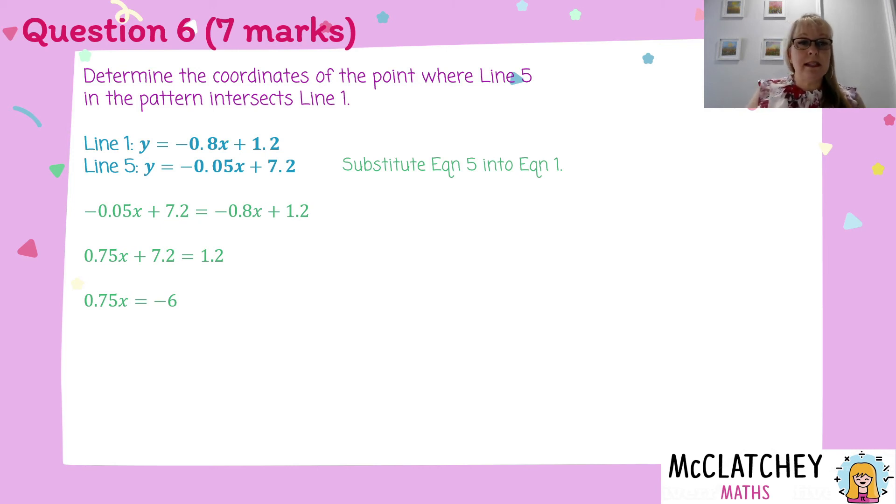Now, at the moment, 0.75 is multiplied by x. I need to undo the multiplication by doing an inverse operation, which means the opposite of multiply. I'm going to divide both sides by 0.75. I'm going to end up with x is equal to negative 8. You'd need to use a calculator for that one.